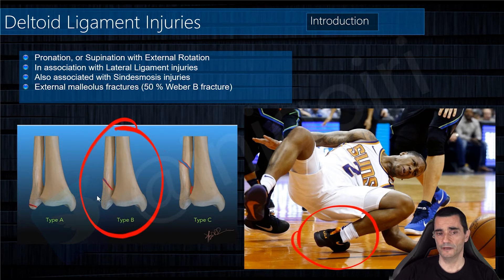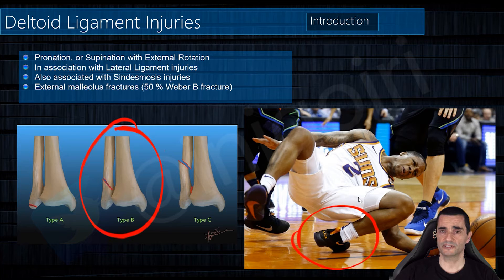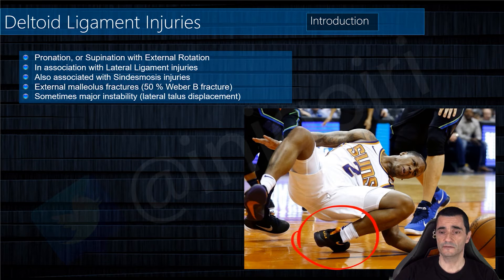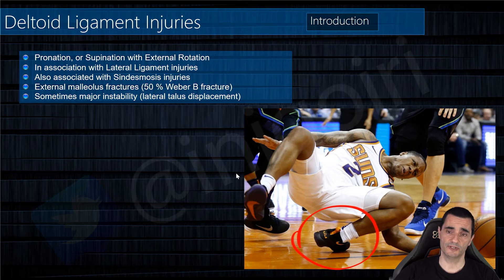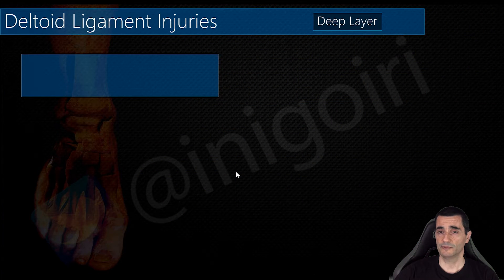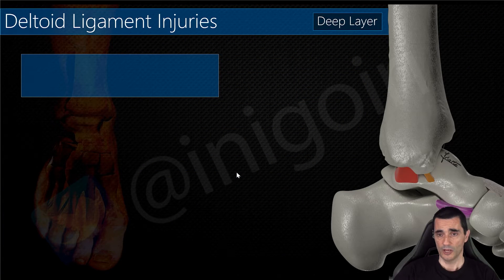Type B external malleolus fractures are associated in 50% of cases with some kind of deltoid complex injury. If we have an injury of both the external and medial complex, a major instability of the ankle may be present. Always check for talus displacement in x-rays or other complementary exams.